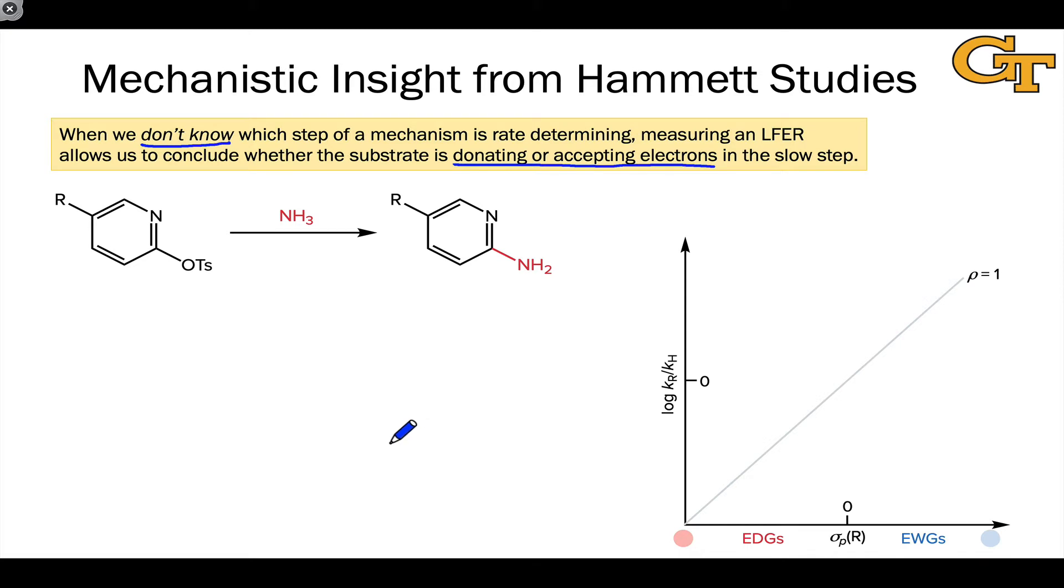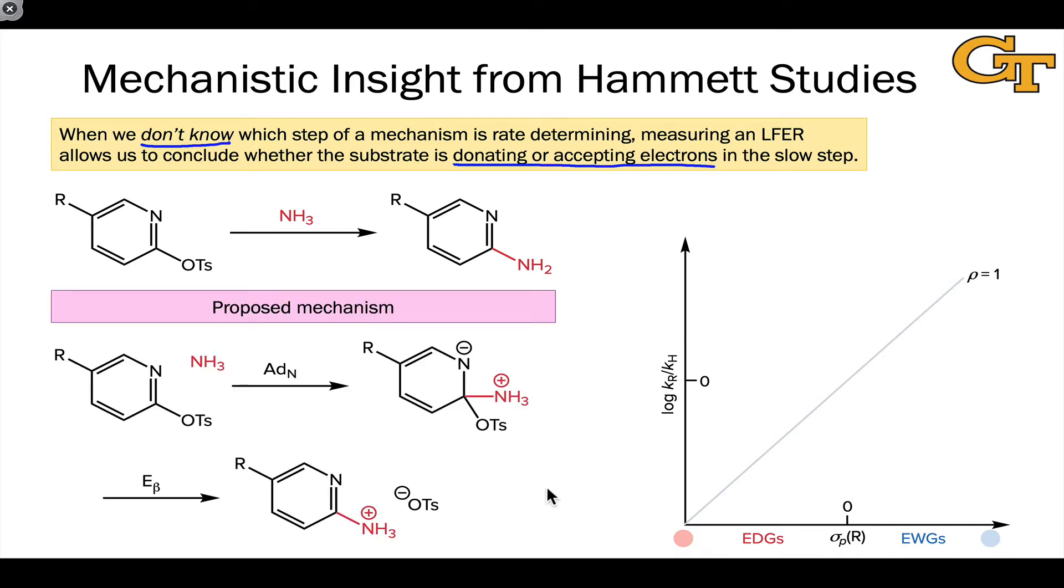We can draw a mechanism for this that's basically the canonical mechanism of nucleophilic aromatic substitution. The nucleophile adds in—that's what we call an ADsubN elementary step. Then a beta elimination kicks out the tosyl group, and a final deprotonation, maybe on workup, gives us the neutral product.